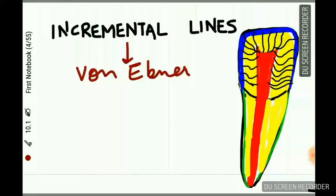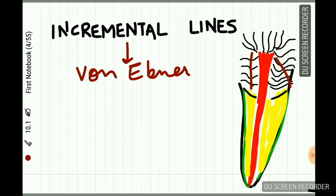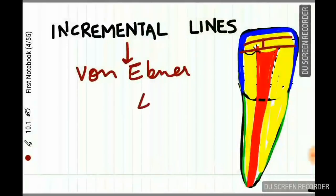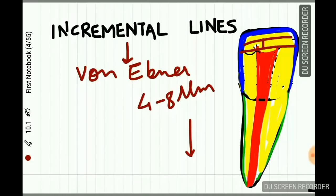These incremental lines represent the growth pattern of dentine. They appear as fine lines perpendicular — at 90 degrees — to the dentinal tubules. The distance between two incremental lines is four to eight micrometers in the crown area and less in the root area. Recent studies reveal that these lines can be 20 micrometers apart.